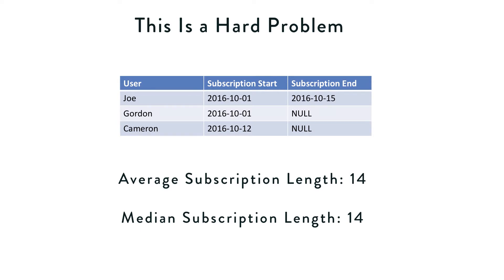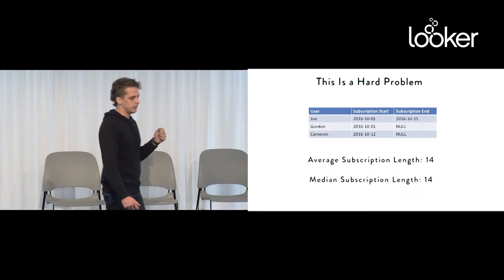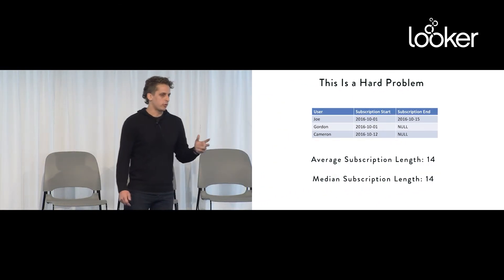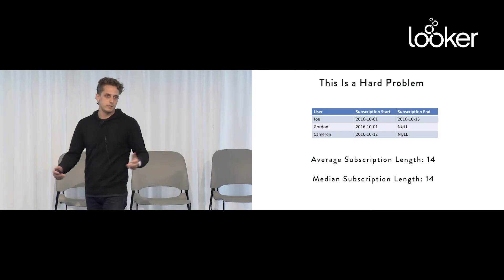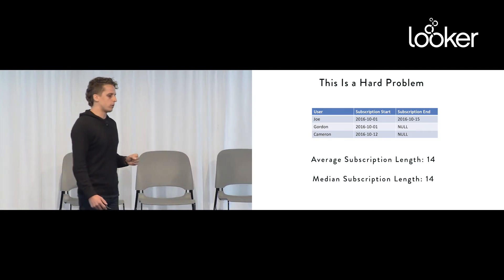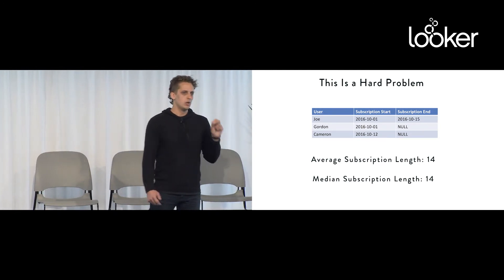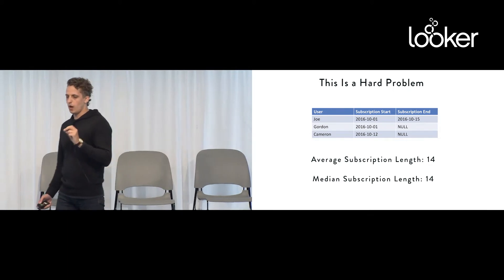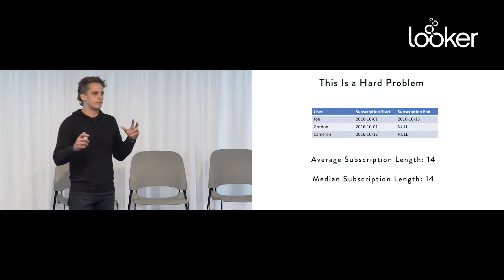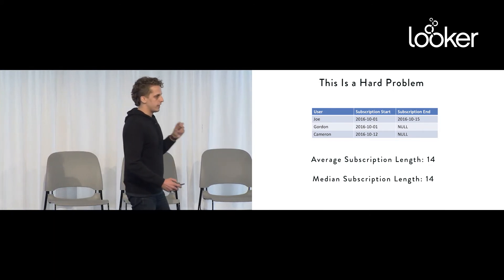Take three example users — Joe, Gordon, and Cameron — all of them start subscriptions in October. Joe ends his subscription 14 days later. If you look at average or median, it's both 14 days. But this is not a good representation of what is going on with our business. Cameron has been on a subscription for only three days, but we don't know what happens to her — it could be two years from now she's still on a subscription. Same with Gordon; he's already been on a subscription for at least 14 days. What we need is a technique that can make use of this data even when we have uncertainty and missing data in our dataset.